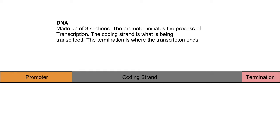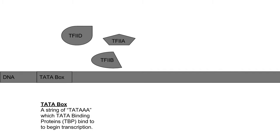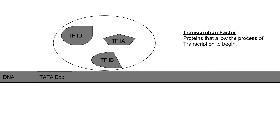The whole process starts with DNA inside of the nucleus. In the promoter of the DNA is something called the TATA box. The TATA box is a string of the nucleotides T-A-T-A-A-A, usually with more A at the end. This is the location where TATA binding proteins, or TBPs, bind. These are transcription factors.